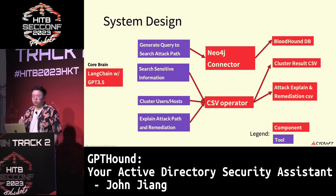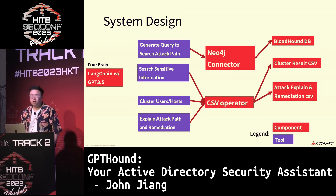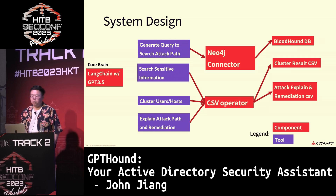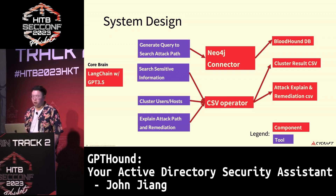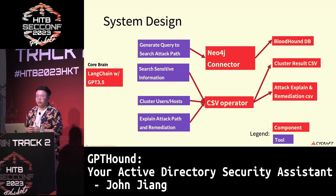We tell ChatGPT: you have the following task and these tools you can use. The tools connect to different components. The Neo4j connector can execute commands and connect to the BloodHound database to pull out data. We give it a schema so it knows what the current schema contains — whether a property is boolean, hex, or a number — so it can generate more specific queries. For the CSV operator, we have the clustering results CSV and our own CSV file about attack expansion and remediation.